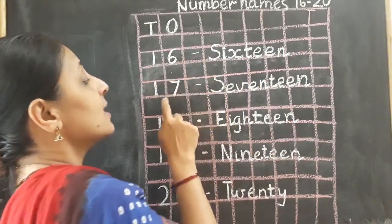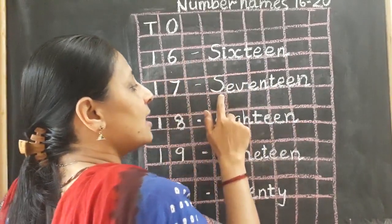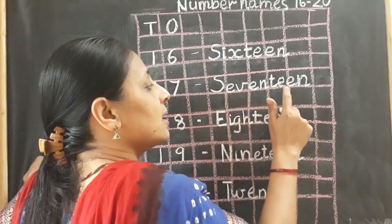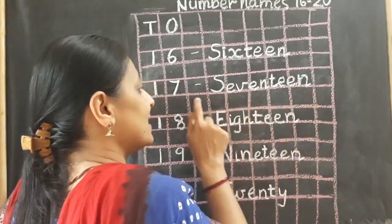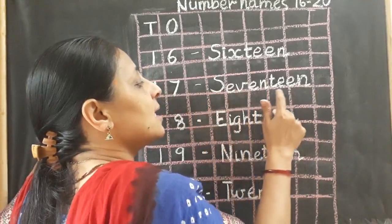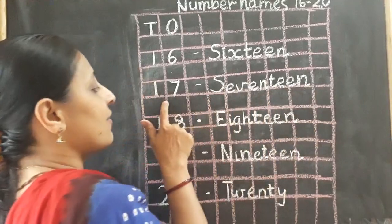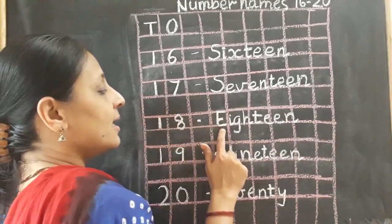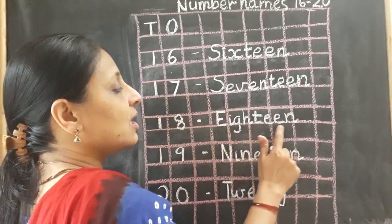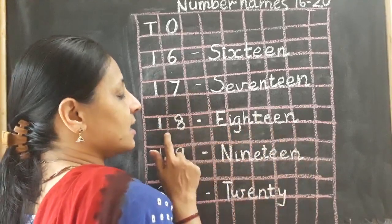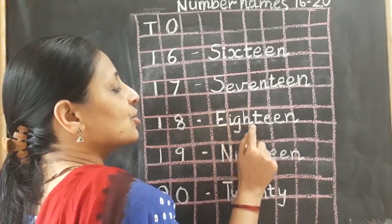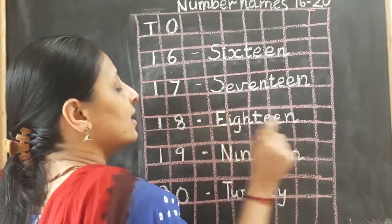Now we will see the number name of 17. S, E, V, E, N, T, E, E, N. Seventeen. Once again: E, I, G, H, T, E, E, N. Eighteen. Once again: E, I, G, H, T, E, E, N. Eighteen.